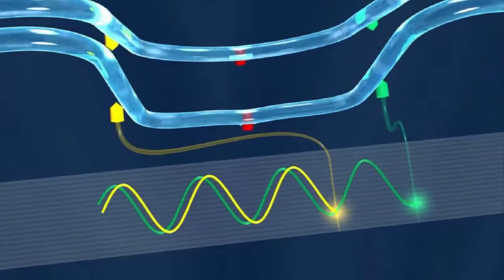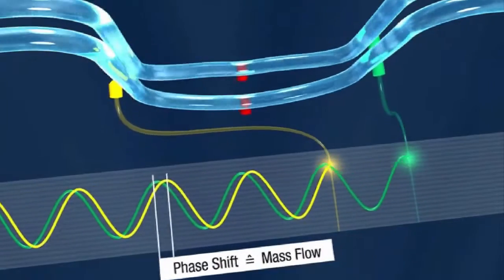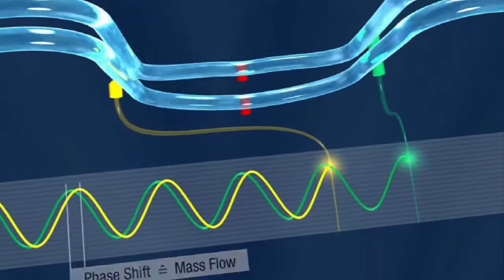A phase shift occurs between the first and the second sensor. The mass flow rate is derived from this phase difference.